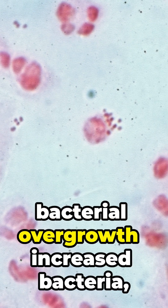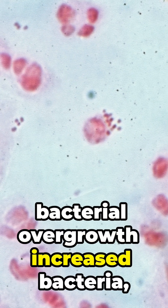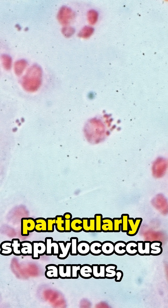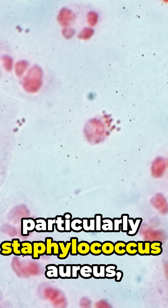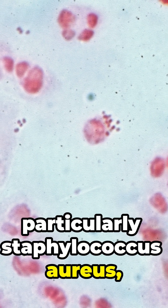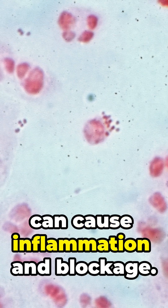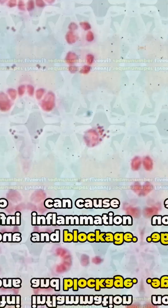Number four: bacterial overgrowth. Increased bacteria, particularly Staphylococcus aureus, can cause inflammation and blockage of the meibomian glands.